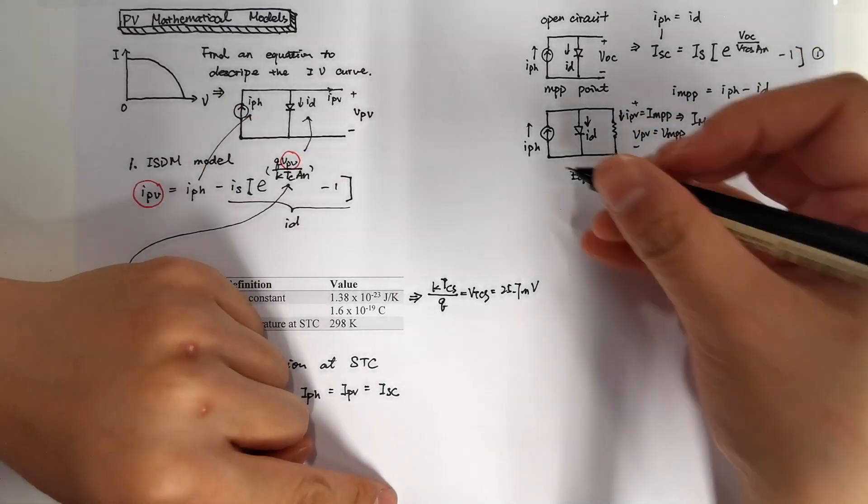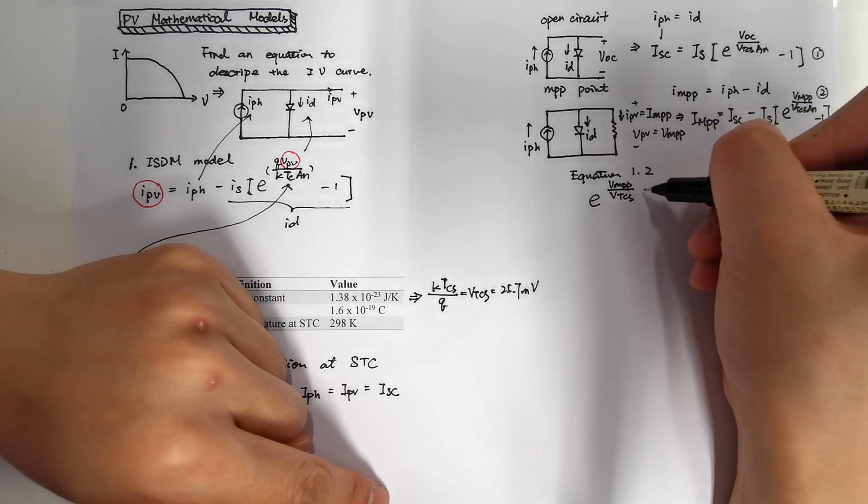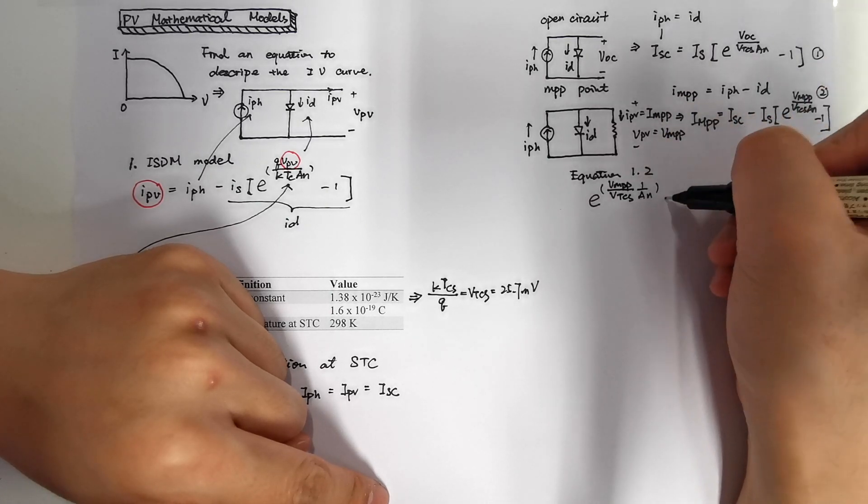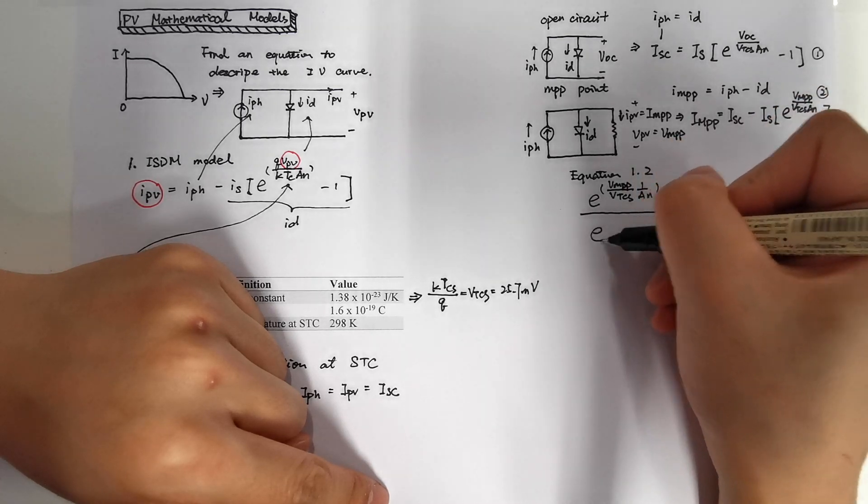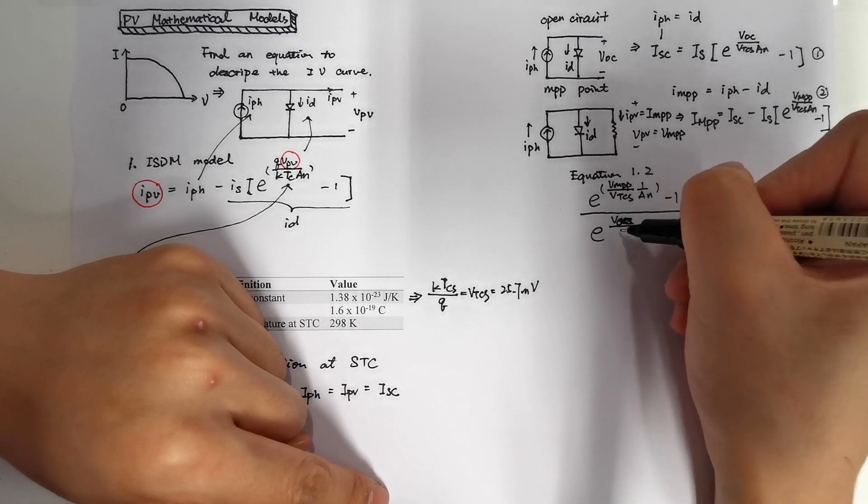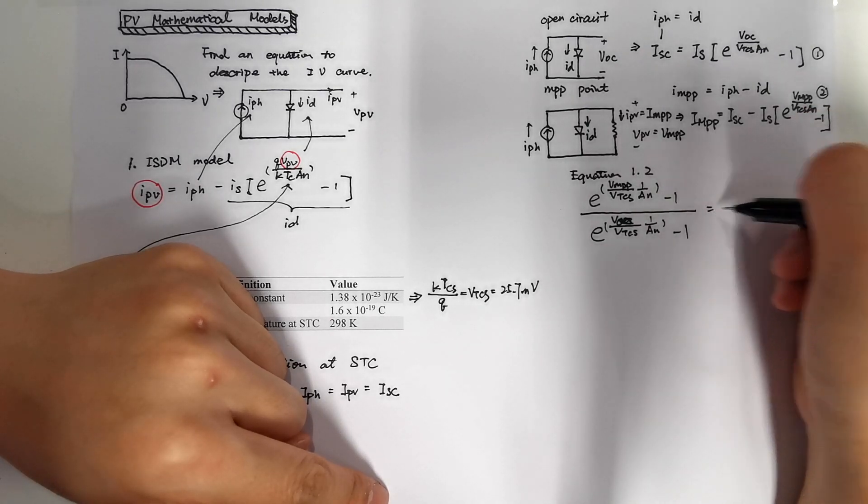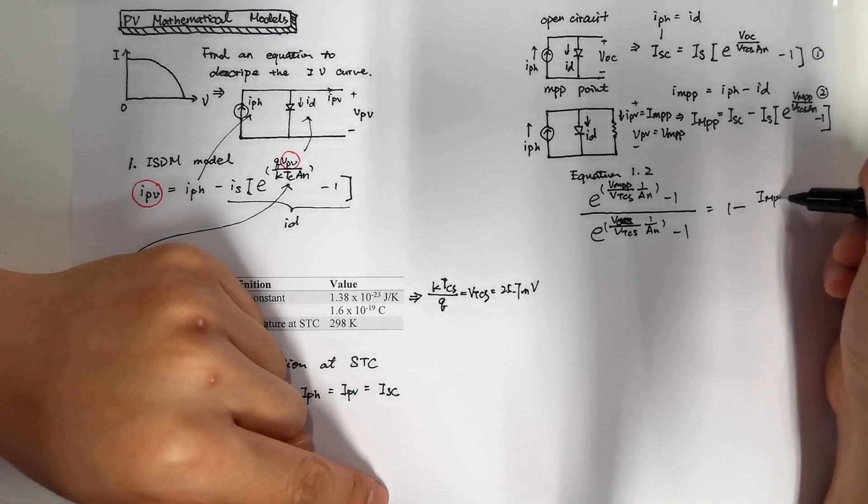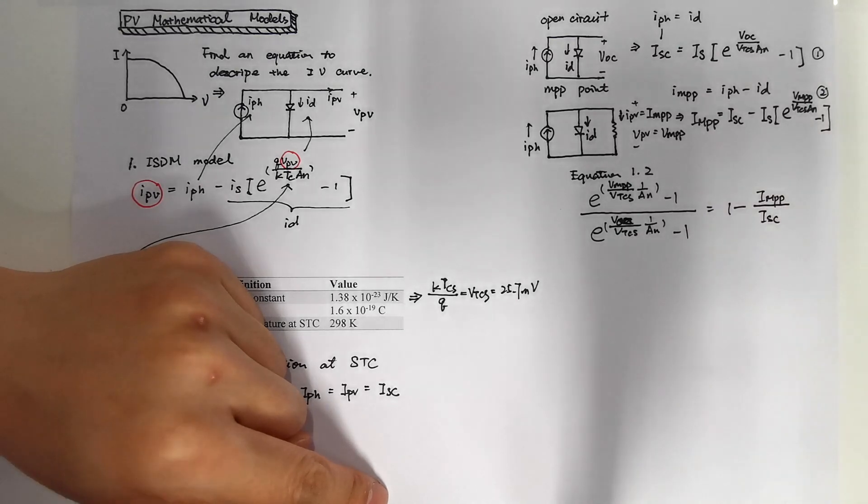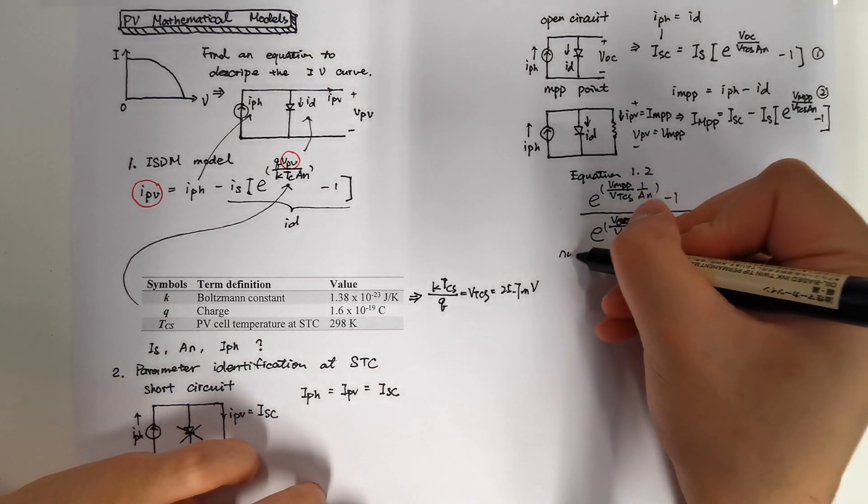By combining equation 1 and 2, we can get this equation. It's e to the power of VMPP divided by VTCS times 1 over AN minus 1 divided by e to the power of VOC divided by VTCS times 1 over AN minus 1 equals to 1 minus IMPP divided by ISC. So this is a non-linear equation.